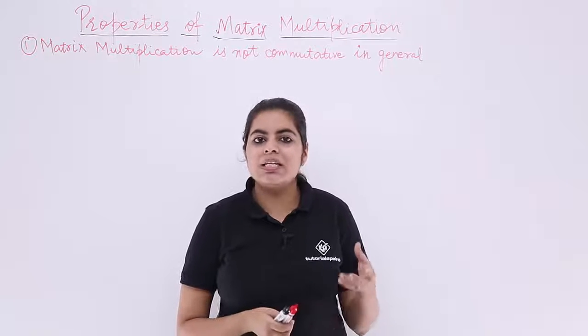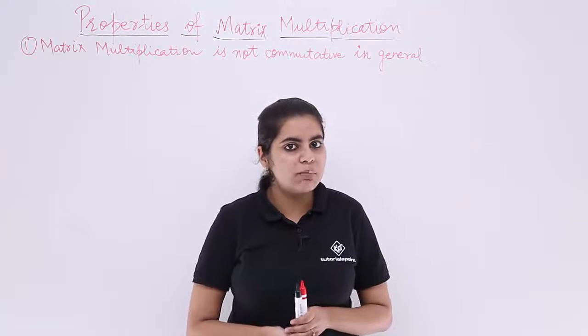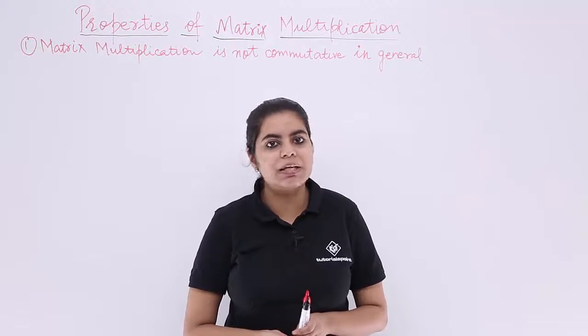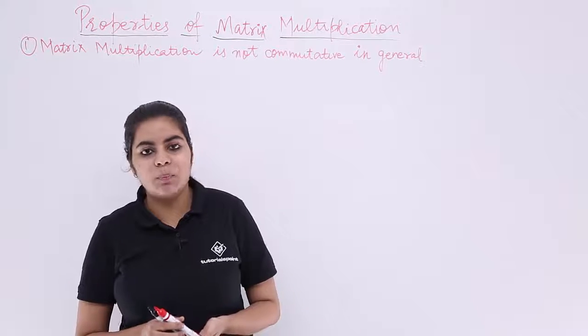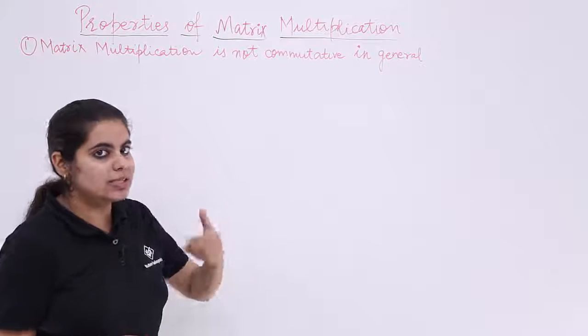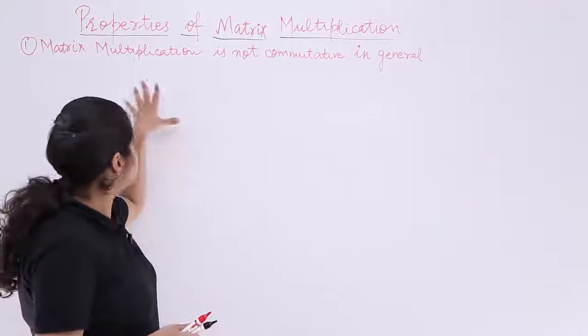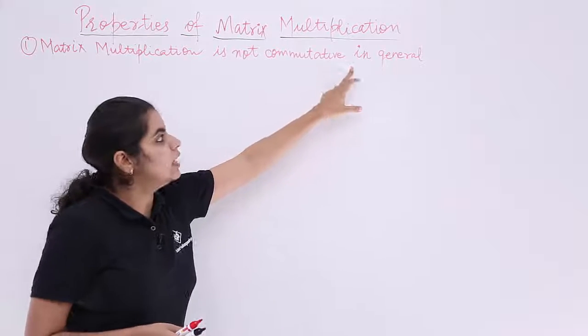We were seeing commutativity in case of matrix addition. What about commutativity in case of matrix multiplication? Actually, in matrix addition, commutativity property is followed. But in case of matrix multiplication, let's see what the statement is. The statement says matrix multiplication is not commutative in general.